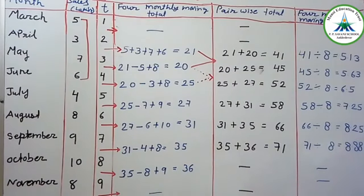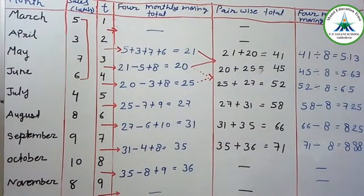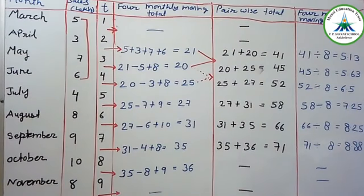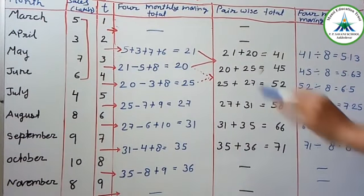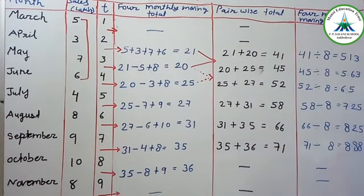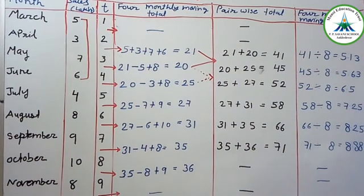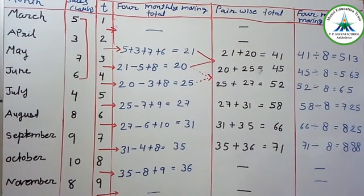Welcome to my class. Last time we completed the moving average method. Today I have the same method, moving average method, but regarding even numbers. Last time we completed odd numbers which were 3 and 5 years to find out. Today I have about 4 years. If it is an even number, then how to find out?